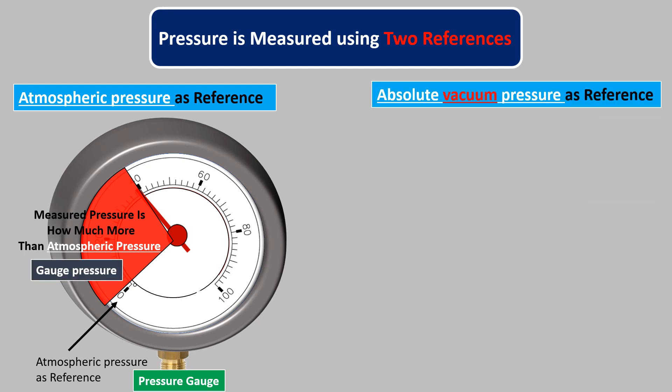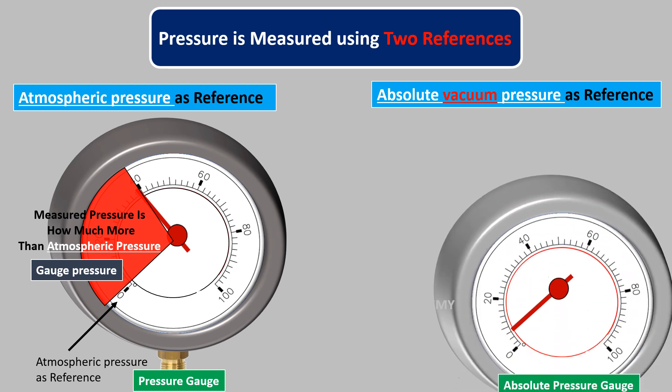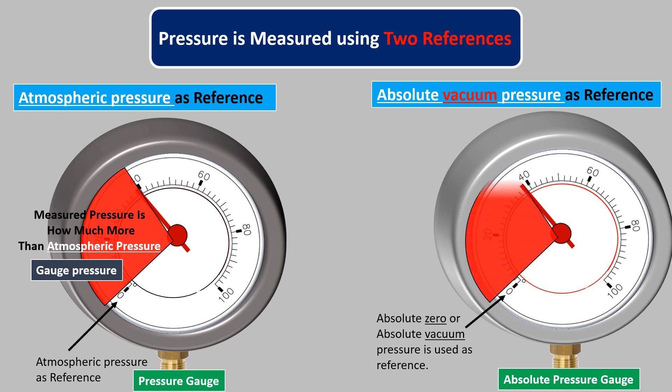In the second method, absolute zero pressure or absolute vacuum is taken as the reference. That means we calculate how much more the measured pressure is than the absolute zero pressure or absolute vacuum. And this pressure is known as absolute pressure.